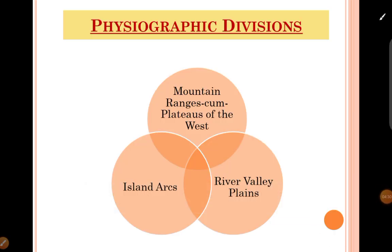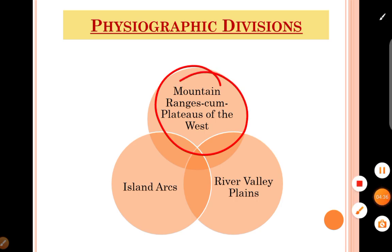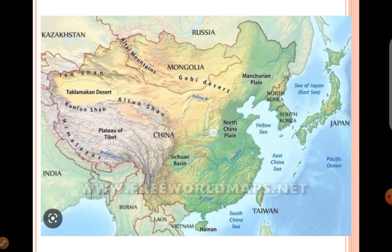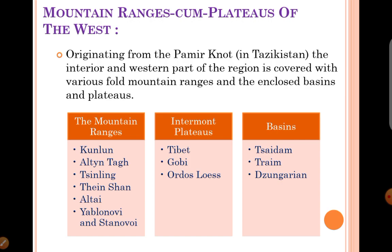Today we will discuss the first part in this video lecture: mountain ranges cum plateaus of the west. Mainly the western portions are all mountains, but in the mountains there are also some plateaus called intermont plateaus, and there are some depression-like structures called basins. These are all the features of mountain ranges cum plateaus of the western region of East Asia.